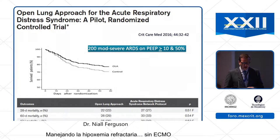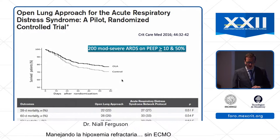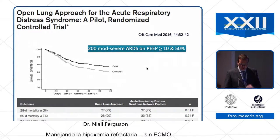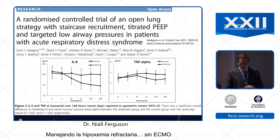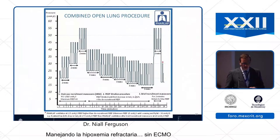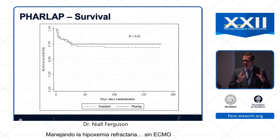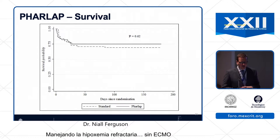This is a study by Bob Kacmarek and Jesus Villar — the open lung approach, almost the same kind of methodology — showing 22 versus 27% mortality favoring the open lung approach. No harm signal here. Similarly, the Australians had first a pilot study showing improvements in inflammatory markers, and then a trial which has been stopped and is not yet published, presented at meetings, showing no difference in mortality but again no harm signal.